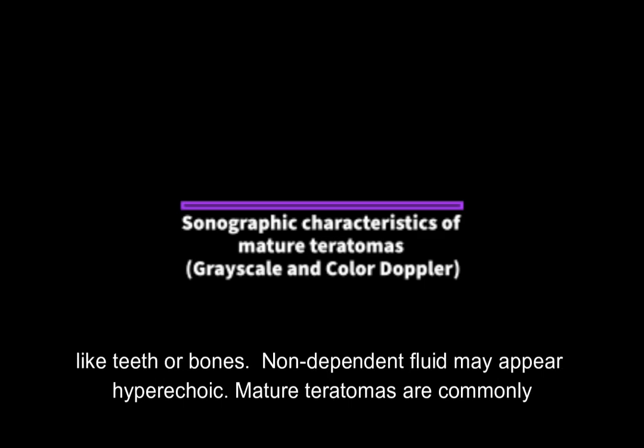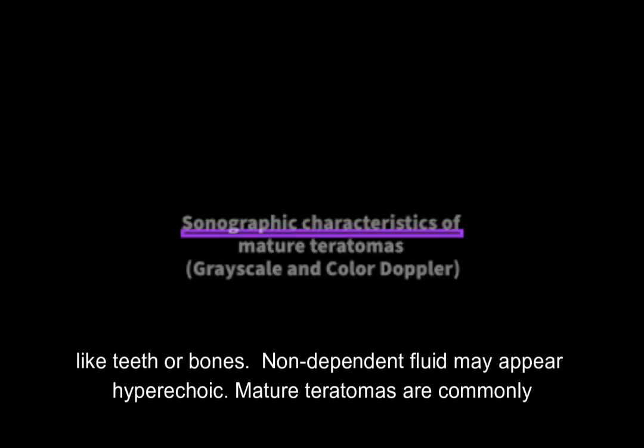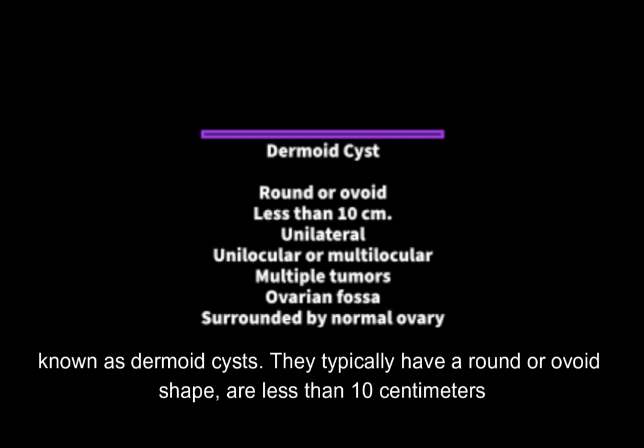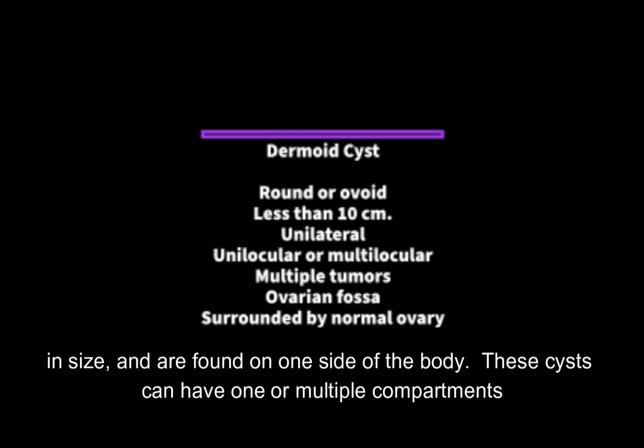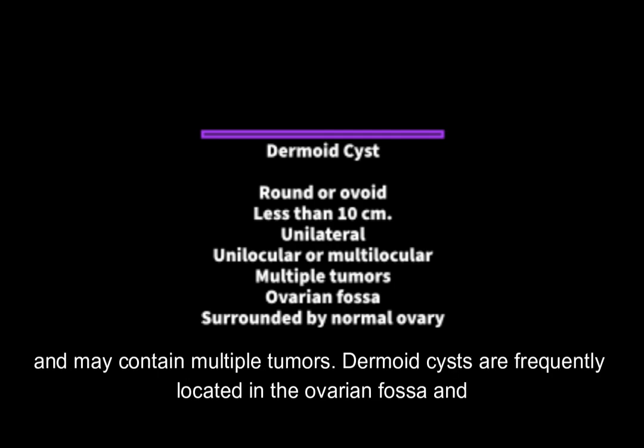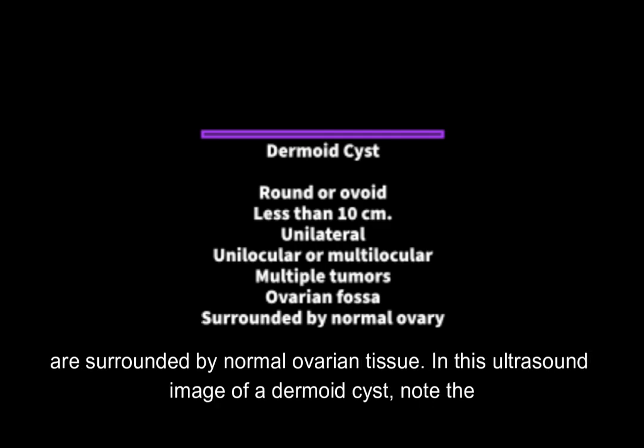Non-dependent fluid may appear hyperechoic. Mature teratomas are commonly known as dermoid cysts. They typically have a round or ovoid shape, are less than 10 cm in size, and are found on one side of the body. These cysts can have one or multiple compartments and may contain multiple tumors. Dermoid cysts are frequently located in the ovarian fossa and are surrounded by normal ovarian tissue.